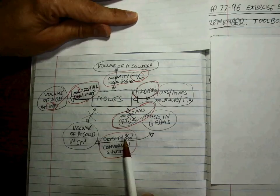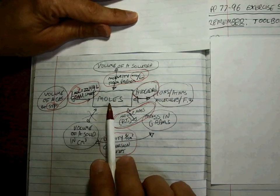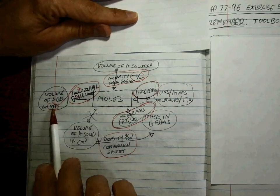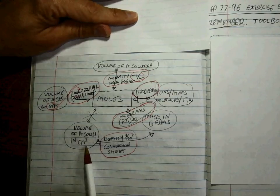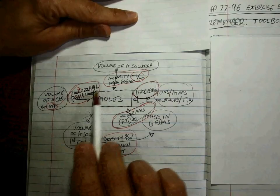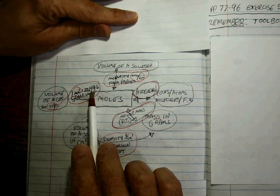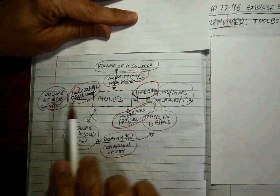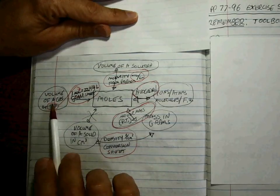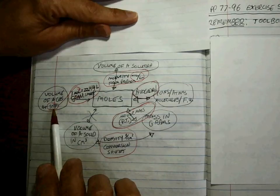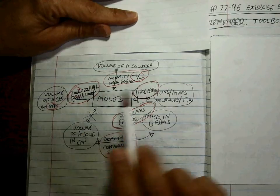How will we get to moles from a volume of a gas at STP, as opposed to volume of a solid in cubic centimeters? Well, STP means that conversion using the conversion sheet. That's how you get between moles and the volume of a gas whenever it's at standard conditions.